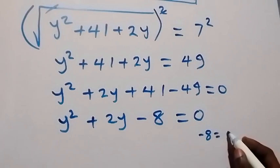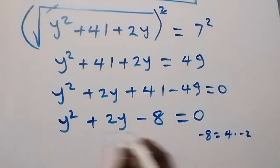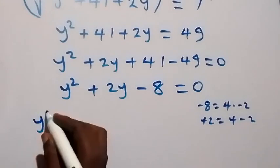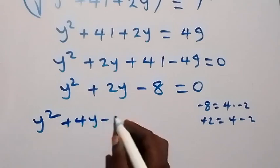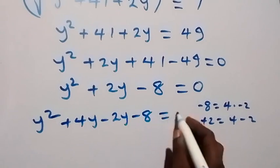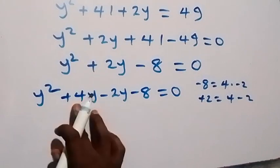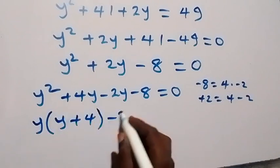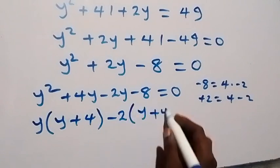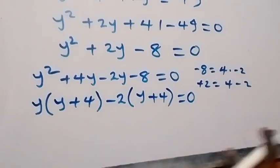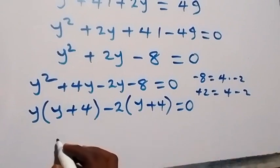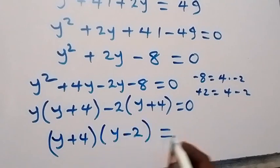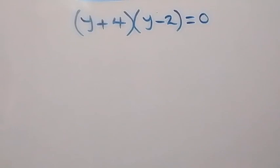Minus 8 can be written as 4 times minus 2, and the sum 4 plus (minus 2) equals plus 2. So we rewrite as y squared plus 4y minus 2y minus 8 equals 0. Grouping: y(y plus 4) minus 2(y plus 4) equals 0, giving (y plus 4)(y minus 2) equals 0.